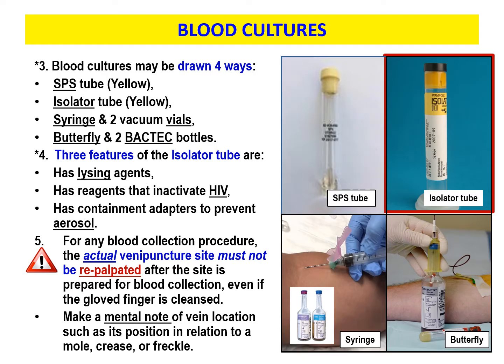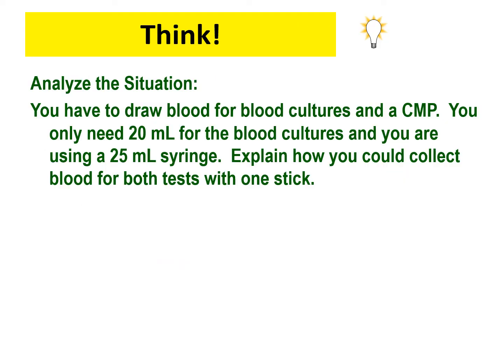Make sure that when you're originally palpating for that vein — before you clean it — you visualize exactly where on that arm you're going to insert the needle. Make a mental note of the vein location in relation to a mole, a crease, a freckle, or anything you can use to locate that vein again without touching it. These thinking slides combine everything from lab and lecture to see if you can handle the situations you may encounter in clinicals or working as a phlebotomist. Pause now, read over it, and see if you're getting the right answers.